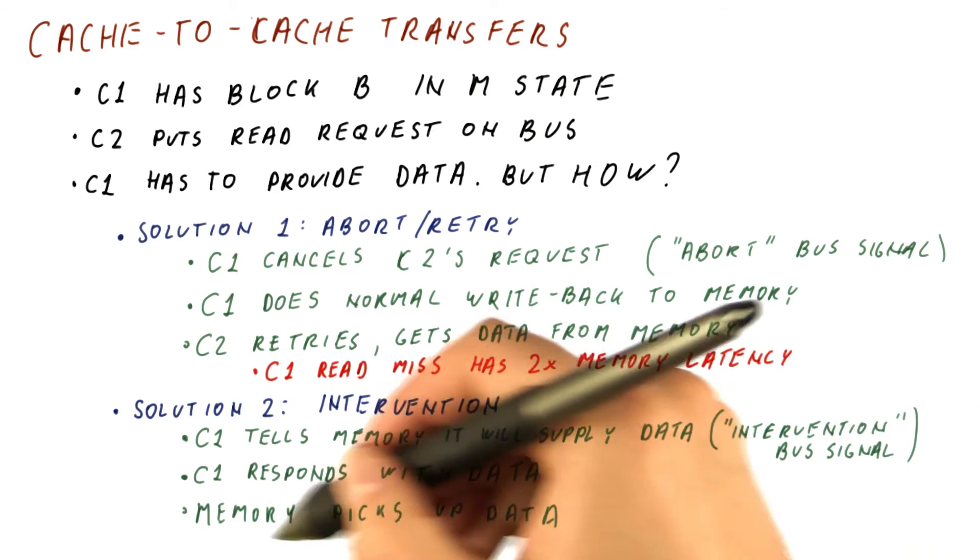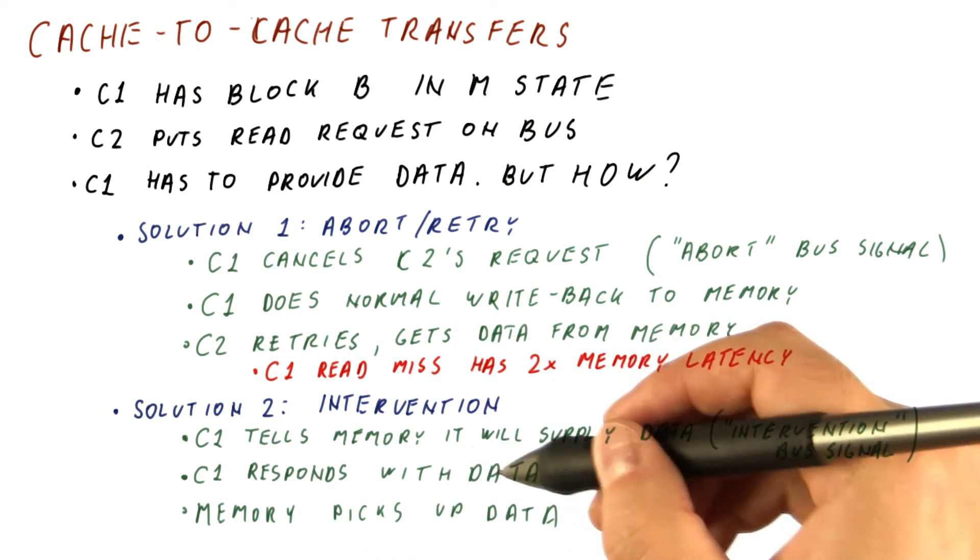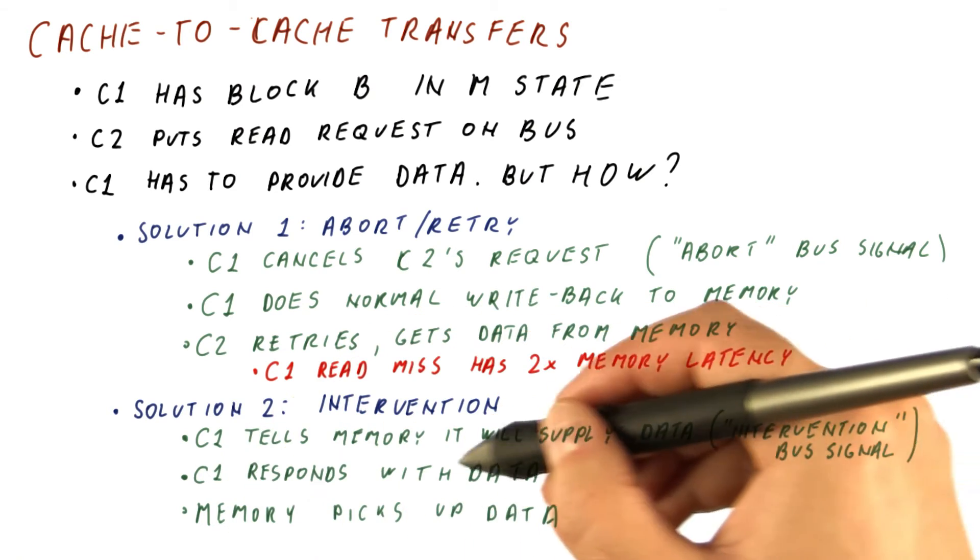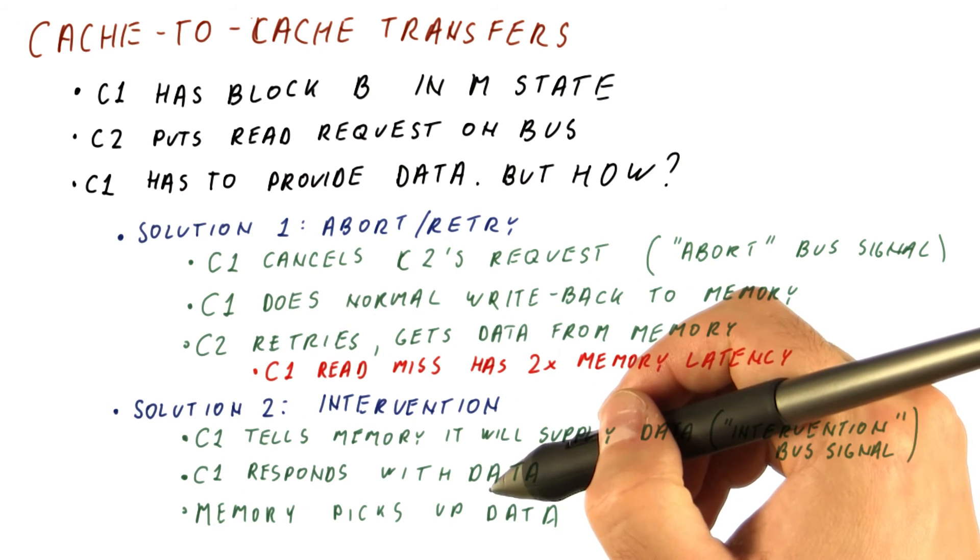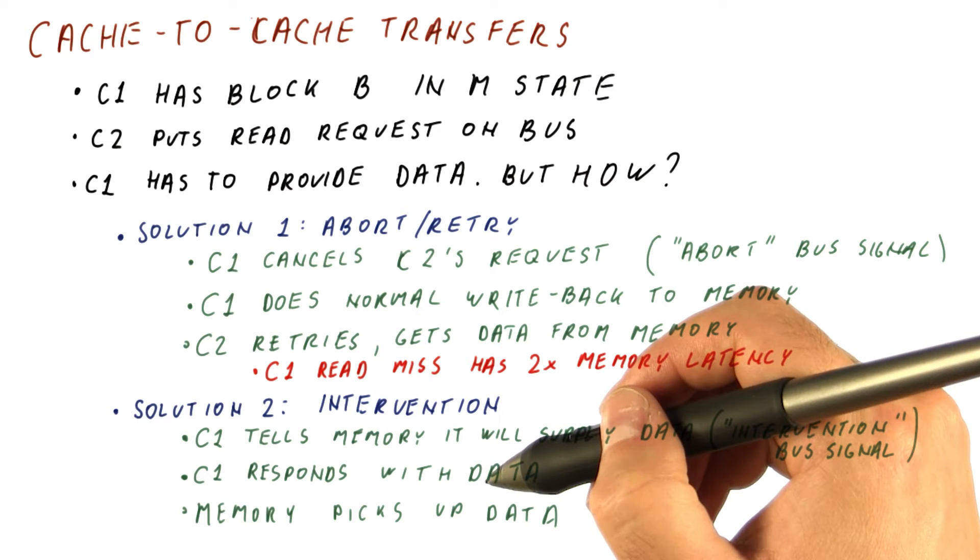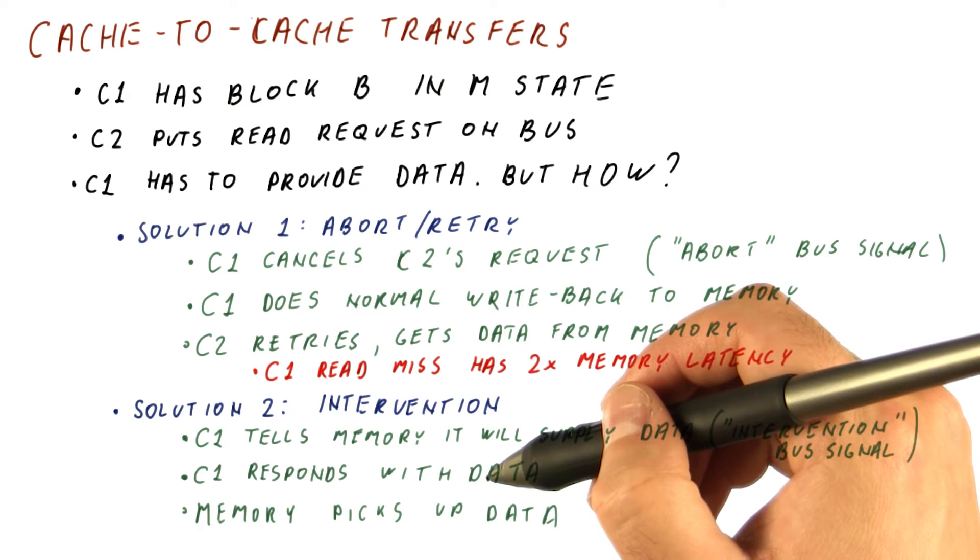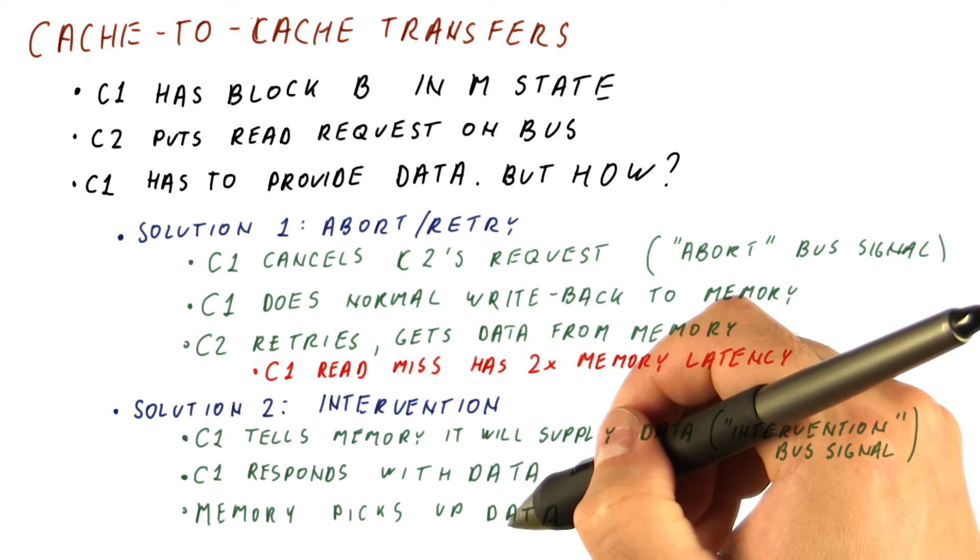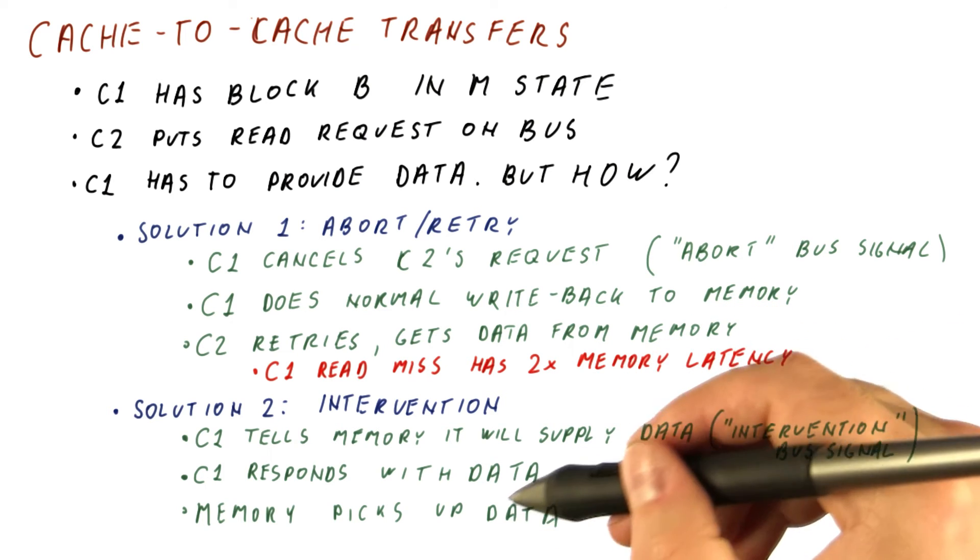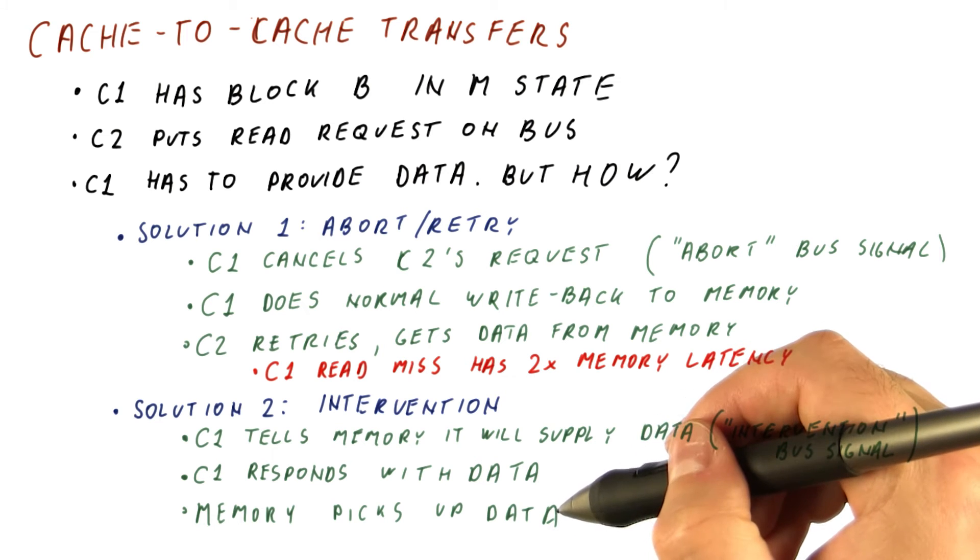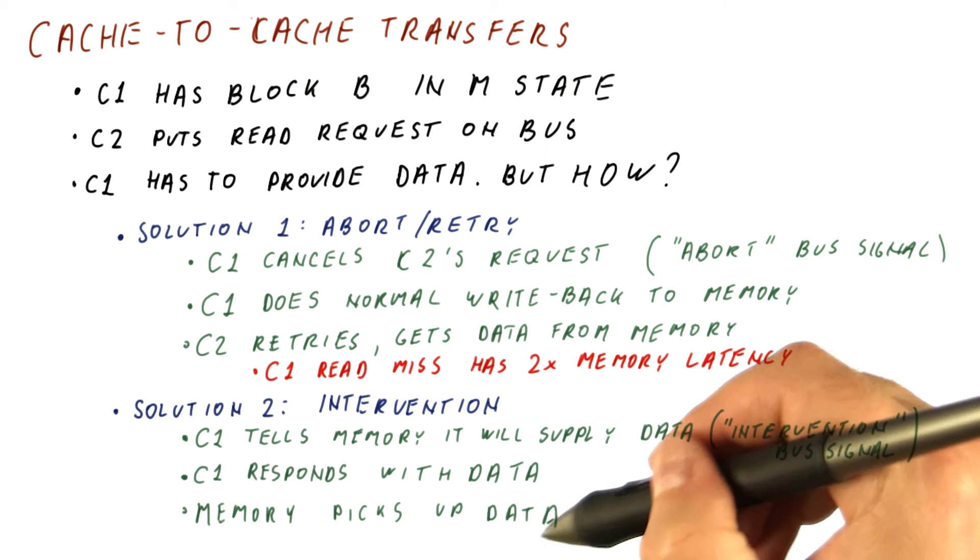The reason the memory has to pick up the data is that once C1 responds with the data, both C1 and C2 will have the block in the shared state. So both of them will think that the block is not dirty, and that means that if the memory doesn't get the data now, it will never get the fresh data. So by picking up the data, the memory ensures that it gets the data that will not be written back anymore.